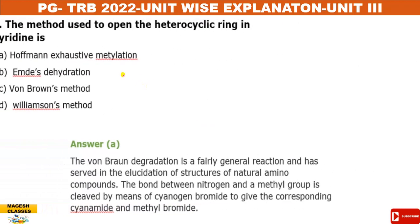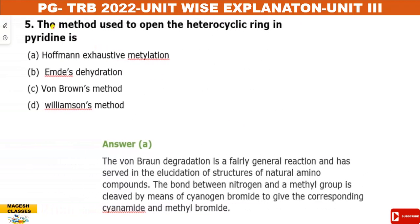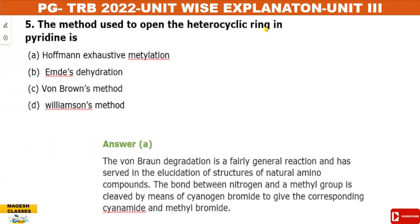Next question: the method used to open the heterocyclic ring in pyridine is: (A) Hofmann exhaustive methylation, (B) Emde degradation, (C) von Braun's method, or (D) Williamson synthesis method. The answer is Hofmann exhaustive methylation, as it is used to open nitrogen-containing rings such as in pyridine.